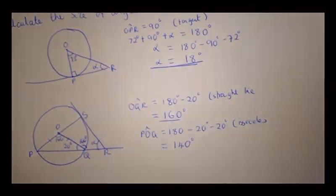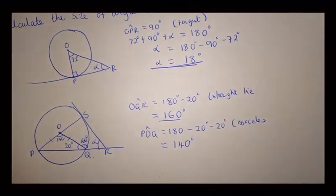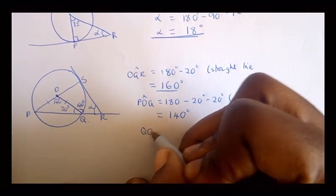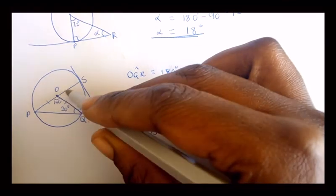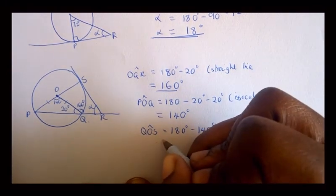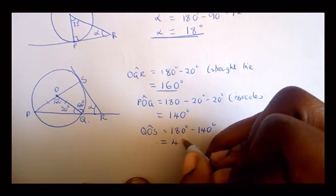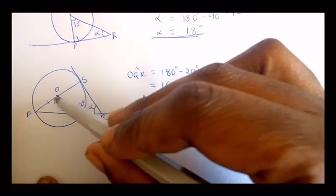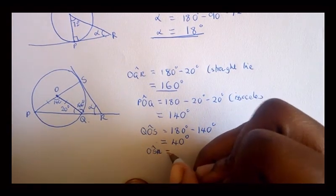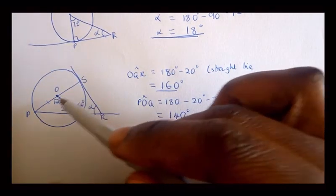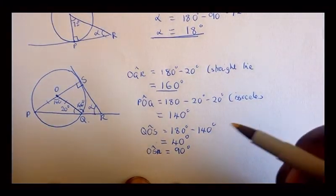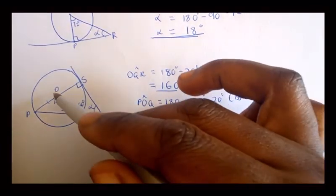To find angle QOS: since this is a straight line, these two angles add up to 180 degrees, so QOS equals 180 minus 140 degrees, which equals 40 degrees. For angle OSR, this equals 90 degrees because this is a tangent and this is a radius passing through the point of contact, so they are perpendicular.